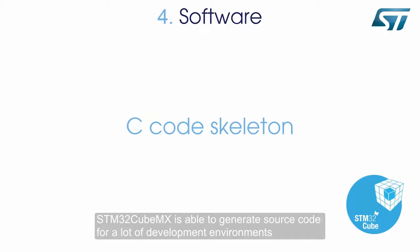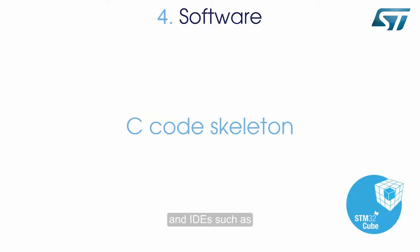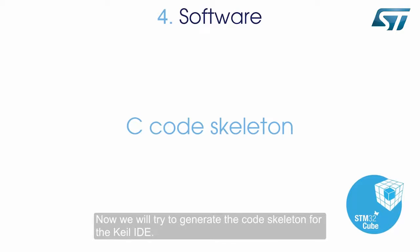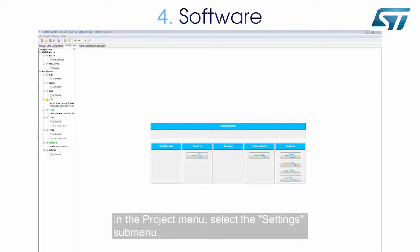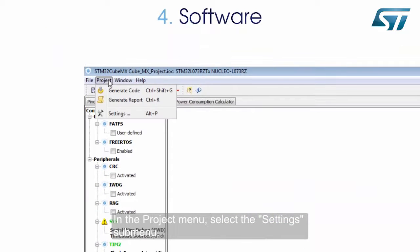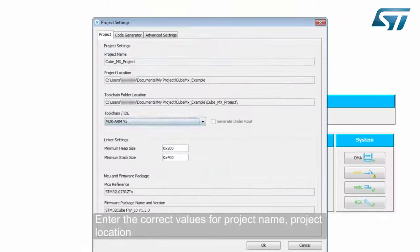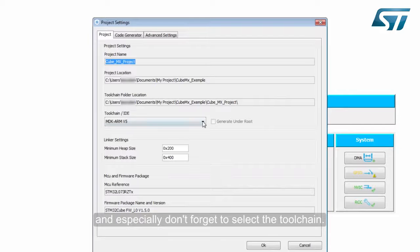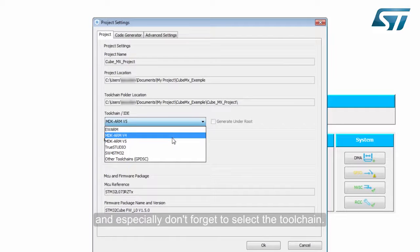STM32CubeMX is able to generate source code for many development environments and IDEs, such as ARM Keil and IAR EWARM. Now we will try to generate the code skeleton for the Keil IDE. In the Project menu, select the Settings submenu. Enter the correct values for Project Name, Project Location, and especially don't forget to select the toolchain.